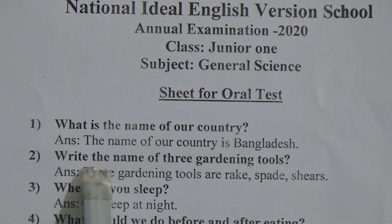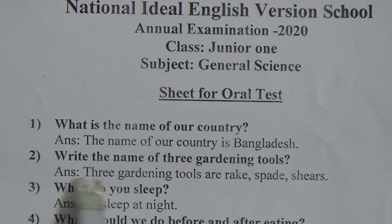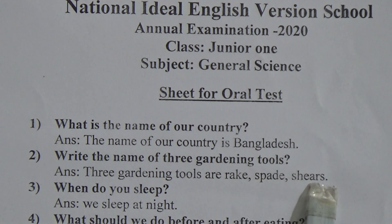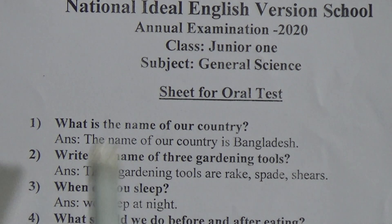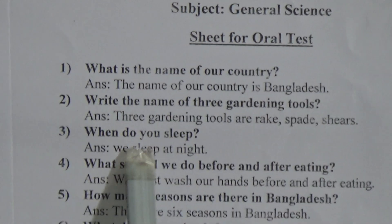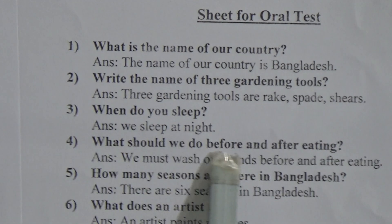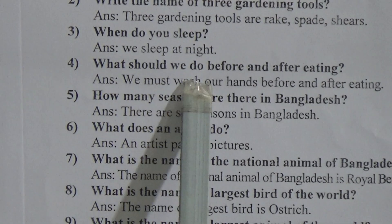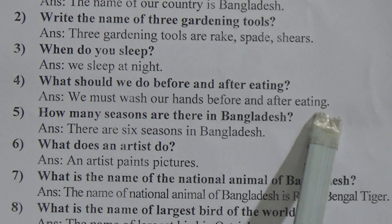Two number: write the name of three gardening tools. The answer is — three gardening tools are rags, peds and chairs. And three number: when do you sleep? We sleep at night. And four number: what should we do before and after eating? Answer — we must wash our hands before and after eating.